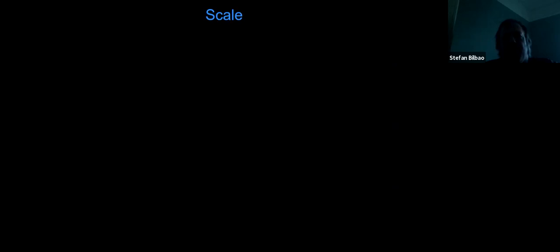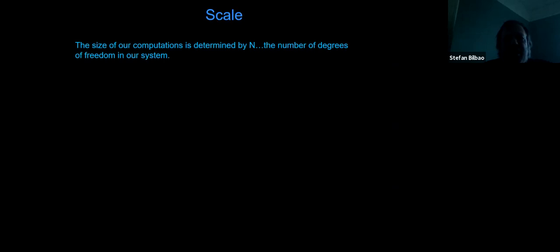I want to say a little more about technical aspects of physical modeling. One has to do with scale: the amount of computational work is determined by some number N, the number of degrees of freedom in the system. Very roughly, the memory and operations per sample scale at best linearly with N. This number can be deduced directly from the physical constants describing the system, and depends strongly on dimension. For the string it's on the order of 50 to 200—child's play these days, easily done in real time even in MATLAB.